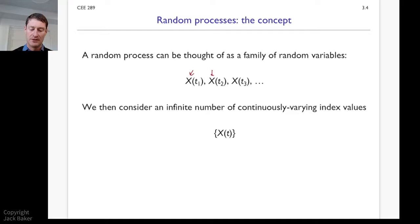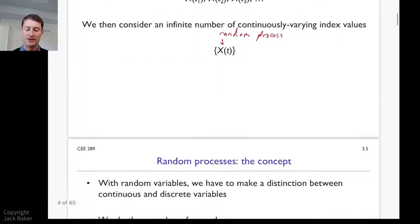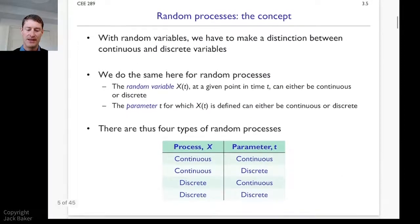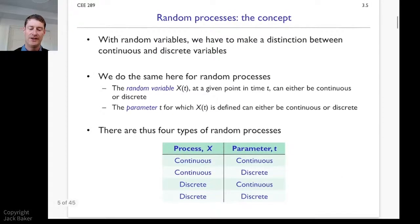We're going to just study the process as a continuously varying function of a continuously varying parameter. Okay, so these would be random variables. And then we're going to just, when we go to these curly brackets, we're just going to talk about the random process as a function of time rather than specifying an individual time.